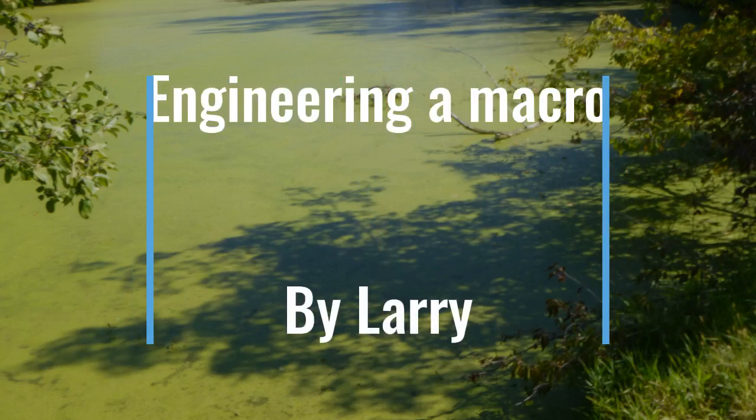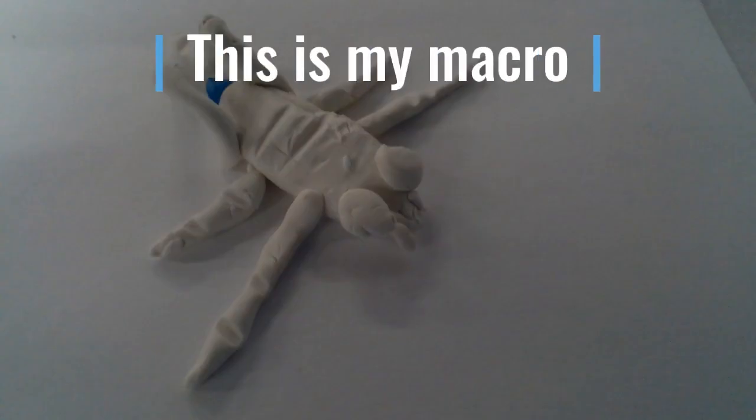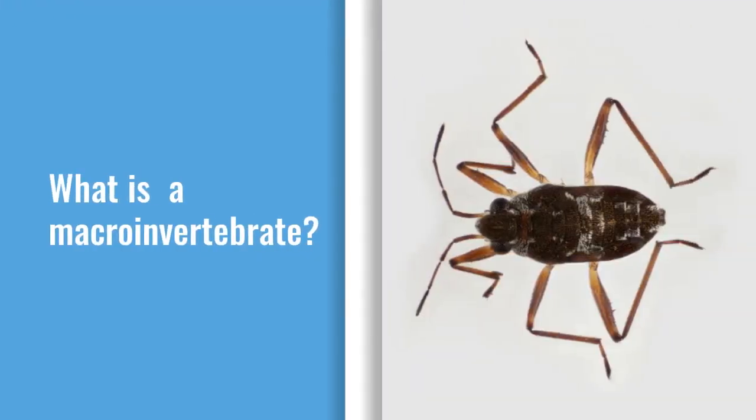Engineering a Macro by Larry. This is my macro. What is a macro? Benthic aquatic macroinvertebrates are insects that live in the bottom of the water, have no backbone, and can be seen with your eyes. They help us learn if water is clean or polluted.